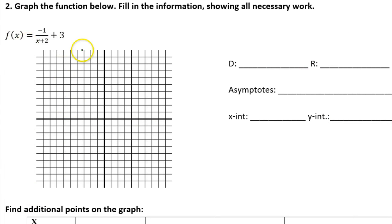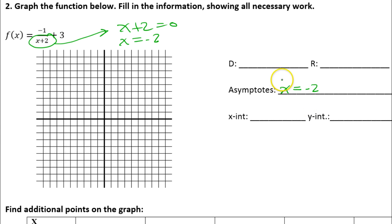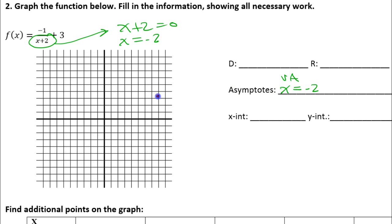For problem number two, we're supposed to make a graph of this function and fill in the information. I like to start with the vertical asymptote. We set the denominator equal to zero: x plus two equals zero gives x equals negative two. So one asymptote will be x equals negative two — a vertical asymptote. Let's go ahead and graph that as a dotted line at negative two.